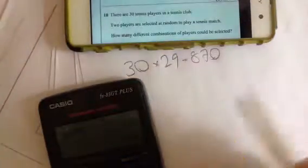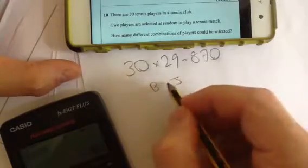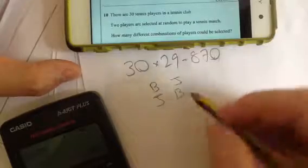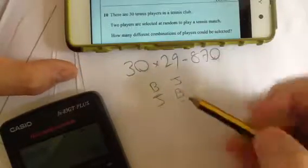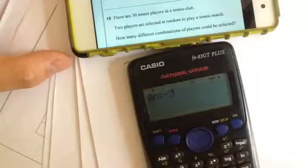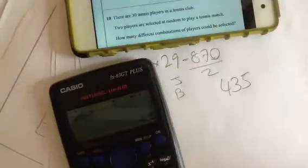But this 870 is all possible ones. So let's say I had Bill and John, who are two different players. This 870 also includes John and Bill. Now essentially, these are the same thing. So what we have to do is halve it because these two double up. Let's divide that by two, and the answer is 435 possible combinations.